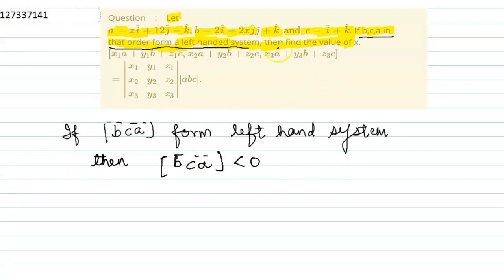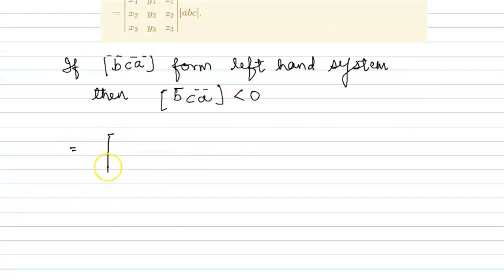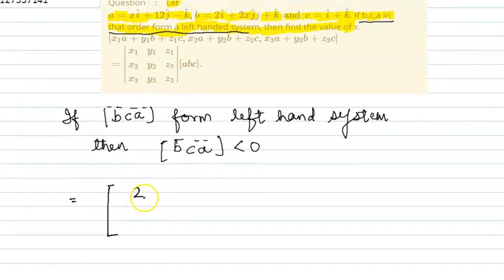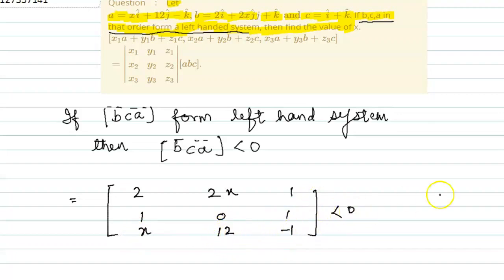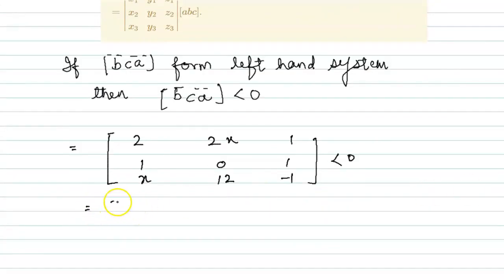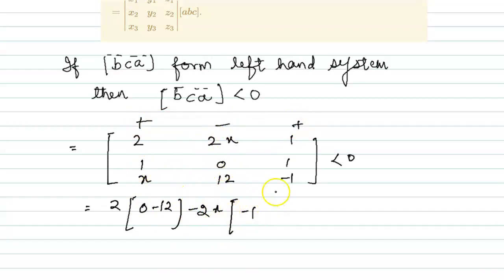So, the values of vectors b, c, a are given. The box product [b, c, a] will be set up as a determinant. Vector b is (2, 2, 1), vector c is (1, 0, 1), and vector a has coefficients (x, 2, −1). This determinant is less than 0.